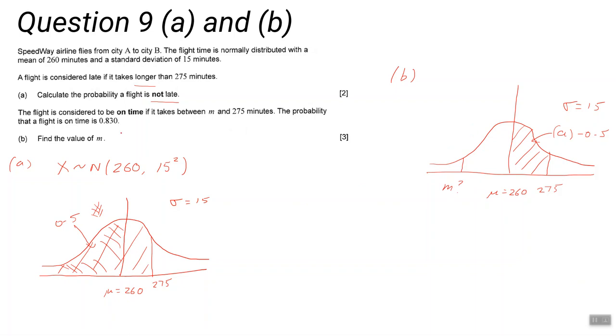M is down here somewhere. How do we know it's down here and not that side? Well, the probability is greater than 0.5, so we have to go beyond the mean. It has to go both sides of the mean. So you know that this area here is 0.830 minus 0.5. That gives you that area there, and then you can solve to find m.